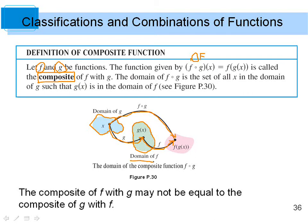The domain of f is actually the outputs in the green blob — that's what gets input into f, and we get a new output. Note at the bottom: the composite of f with g may not be equal to the composite of g with f. If we switch it around and do g of f of x, it is most of the time a different function than f of g.